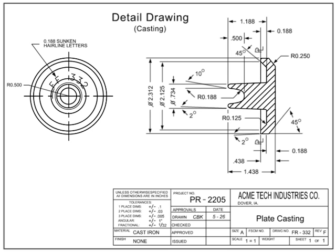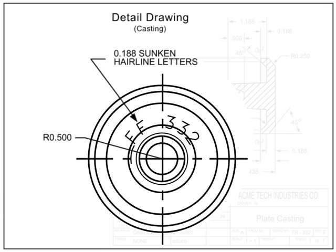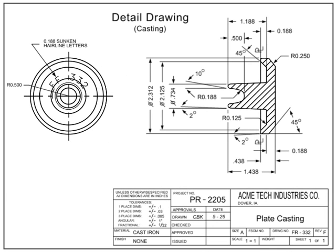A critical part of any configuration control process is adequate identification of manufactured parts. Most castings have their part numbers permanently cast into the part. The dimensions on a casting drawing are what the foundry or manufacturer uses to make a pattern or mold and are the final cast dimensions of the part. Other information that may be included on a casting drawing are mold lines, datum plane references, and even information on how to best remove the part from the mold.